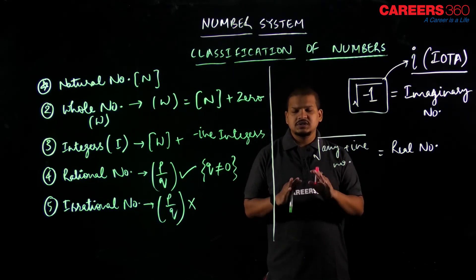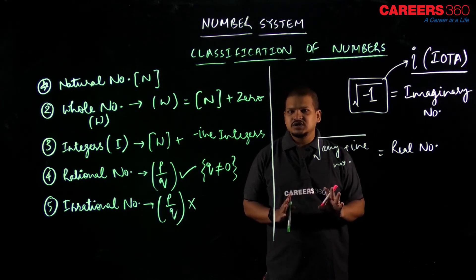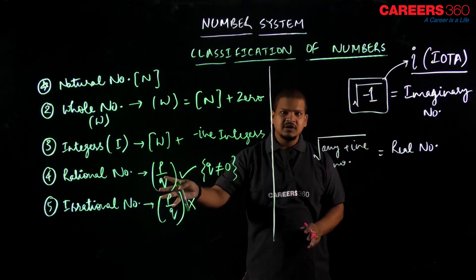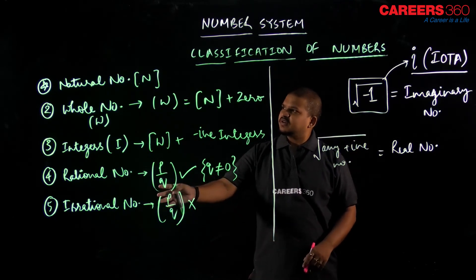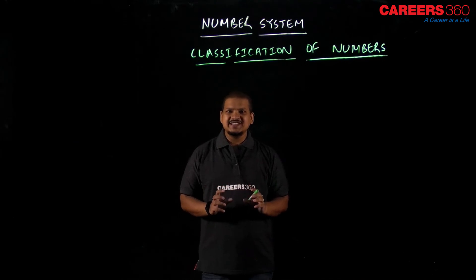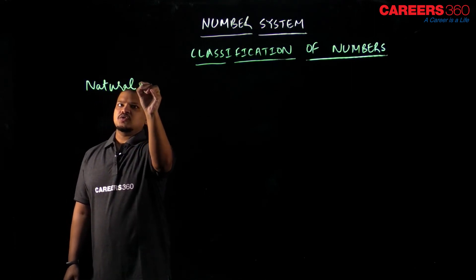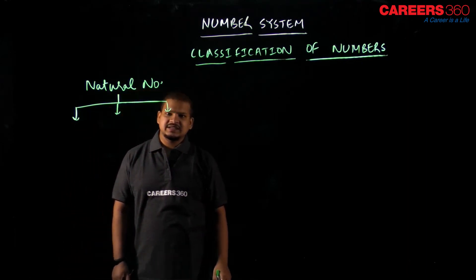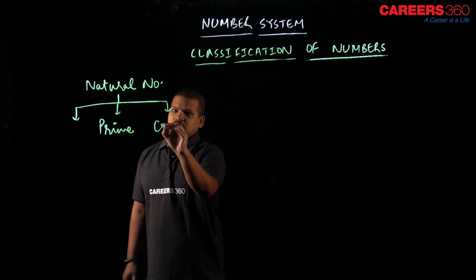Complex numbers and quadratic equations is a vast chapter in class 11 that you will study, but for now this is just an introduction to imaginary numbers. Now let's look at the further bifurcation of natural numbers. Natural numbers can be divided into three categories: first is prime numbers, second is composite numbers, and third is the number one.